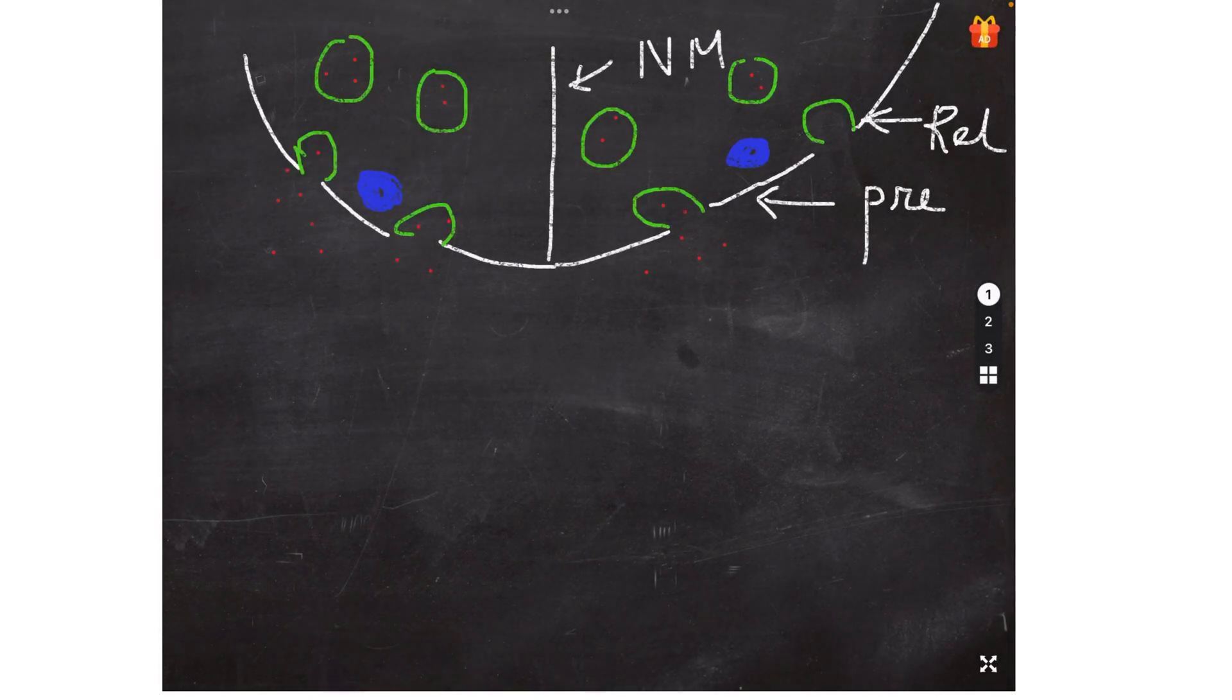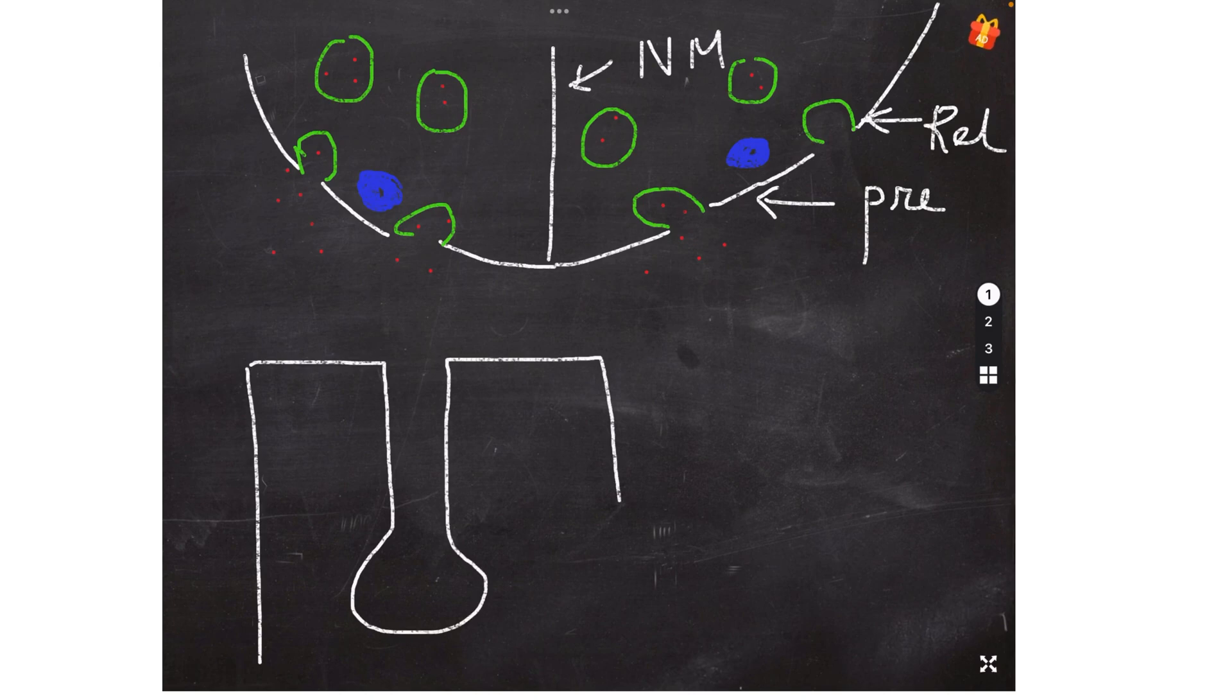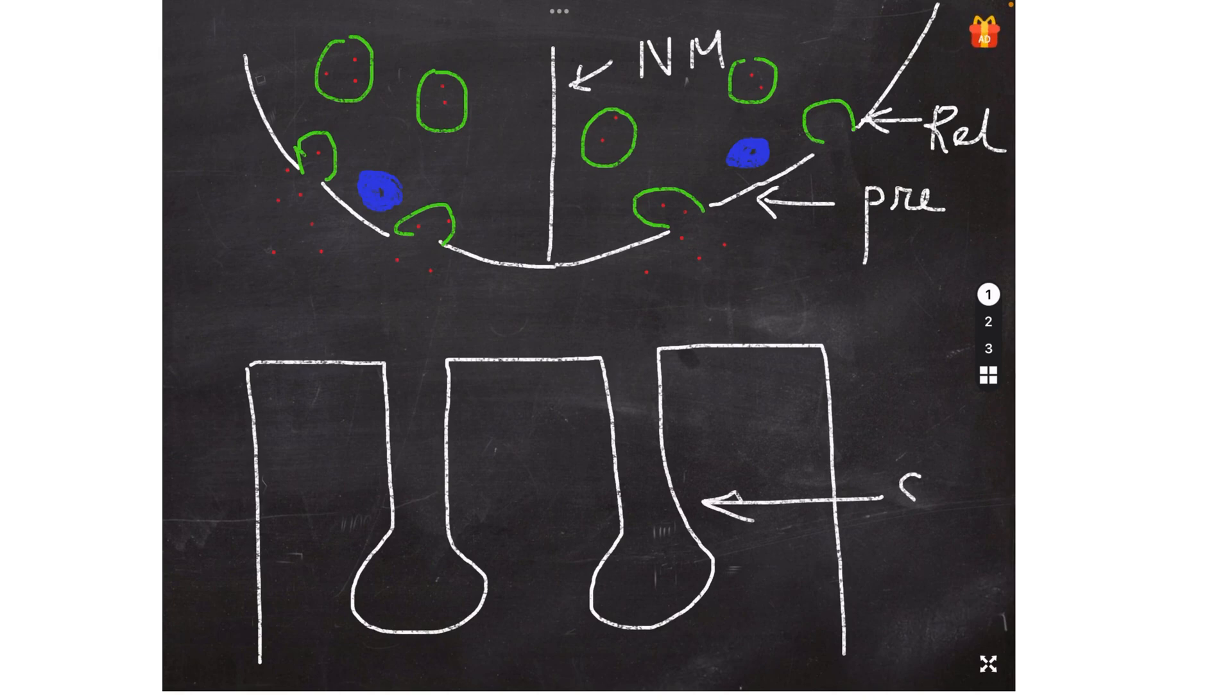Now let's go ahead and draw the post-synaptic membrane. The post-synaptic membrane has certain test tube looking like structures which are nothing but the subneural clefts.